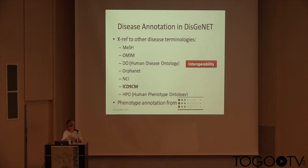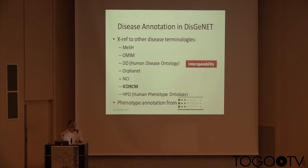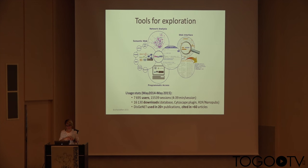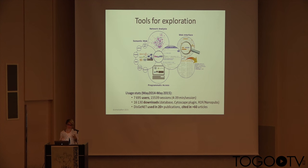We also make an effort to annotate our diseases. We reference all diseases to several disease terminologies to be more interpretable, and we annotate our diseases with disease-phenotype associations from the HPO project, in order to generate gene information at a fine-grained phenotype level. The Genet platform has several tools for exploring the data, including a web interface to browse and search, and a Cytoscape plugin to perform network analysis.